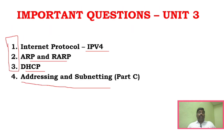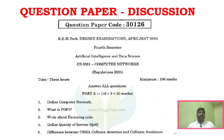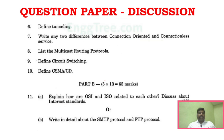Now we will see question paper discussion. We are taking the April-May 2023 question paper. For Part A, the questions include: Define Computer Network, What is POP3 Protocol, Hamming Code, Quality of Service, CSMA/CA and CSMA/CD, Define Tunneling, Difference between connection-oriented and connectionless service, Multicast Routing Protocols, Circuit Switching, and CSMA CA and CD.